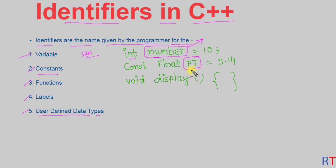Similarly, whenever we create a function like 'void display', the name of the function is given by the programmer and is also an example of an identifier. We can also have labels and user-defined data types whose names are given by the programmer, and they are examples of identifiers in C++ programming.